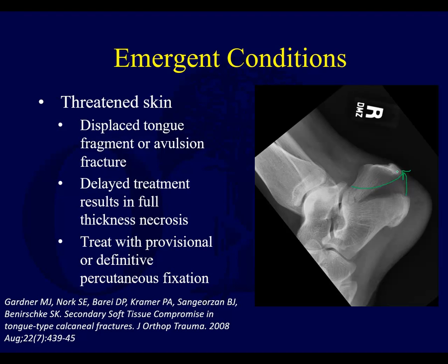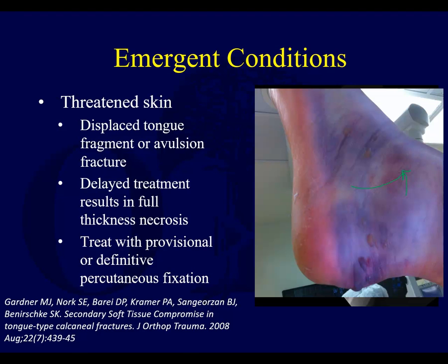By definition, a tuberosity avulsion doesn't always cause threatened skin, but if you ever see this, you have to check and make sure the skin posteriorly is not blanched or tented and at risk for causing skin death. These have to often be reduced and fixed emergently to take that pressure off the skin posteriorly, even if you have to reduce it and pin it and keep the foot in plantar flexion. Oftentimes, screw fixation can be done early as well, percutaneously.